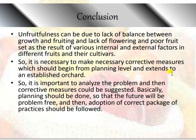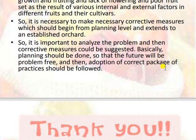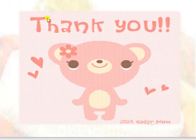Unfruitfulness can be due to the lack of balance between growth and fruiting, lack of flowering, and poor fruit set as a result of various internal and external factors in different fruits and their cultivars. It is necessary to make corrective measures beginning from the planting level and extending to establishment of the orchard. It is important to analyze the problems and then suggest corrective measures. Planning should be done so that the orchard will be problem-free, and then adoption of corrective packages of practices should be followed. Thank you. This was all about unfruitfulness.